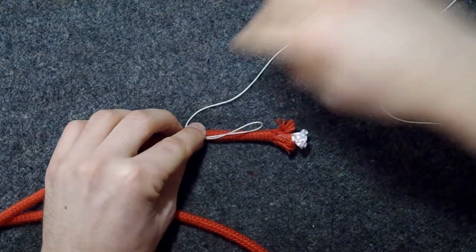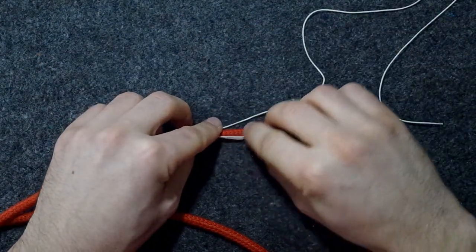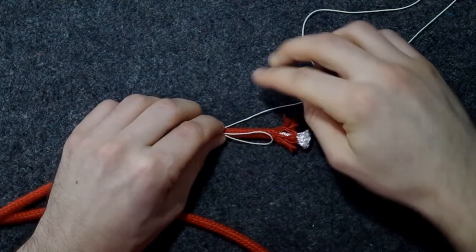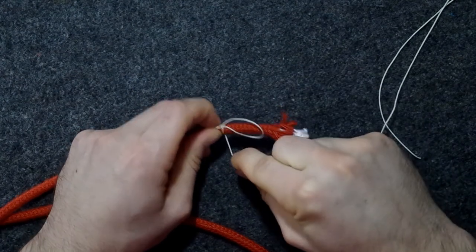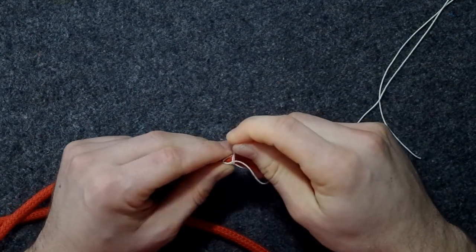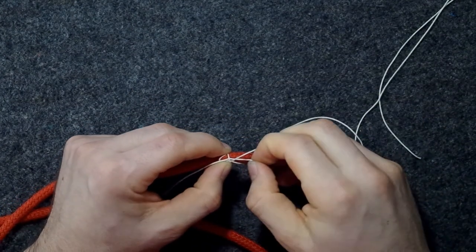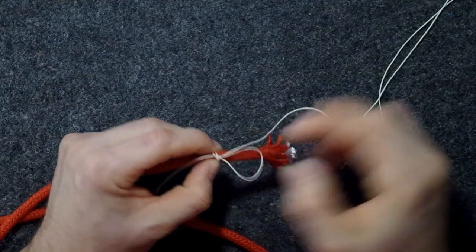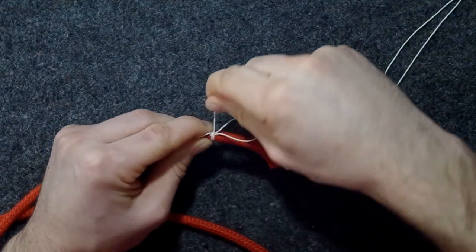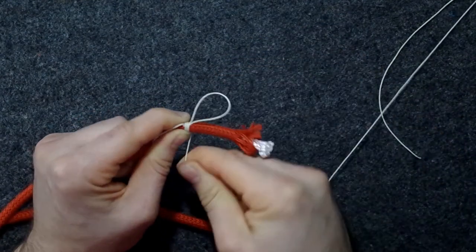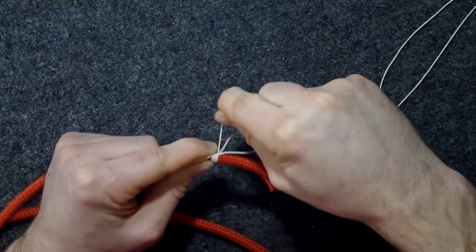And then I will take this part, maybe like that. And then I will just start making turns like this. And I will make them tight. The tighter you make them, the better the whipping will hold in the end.